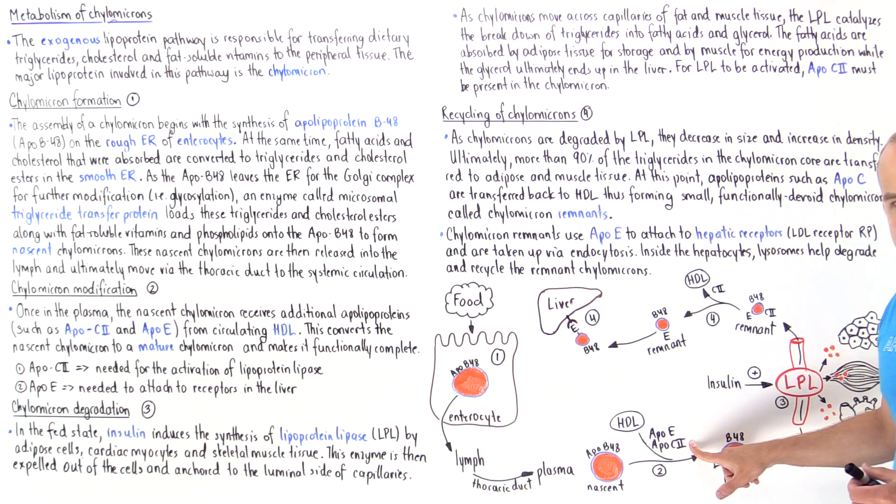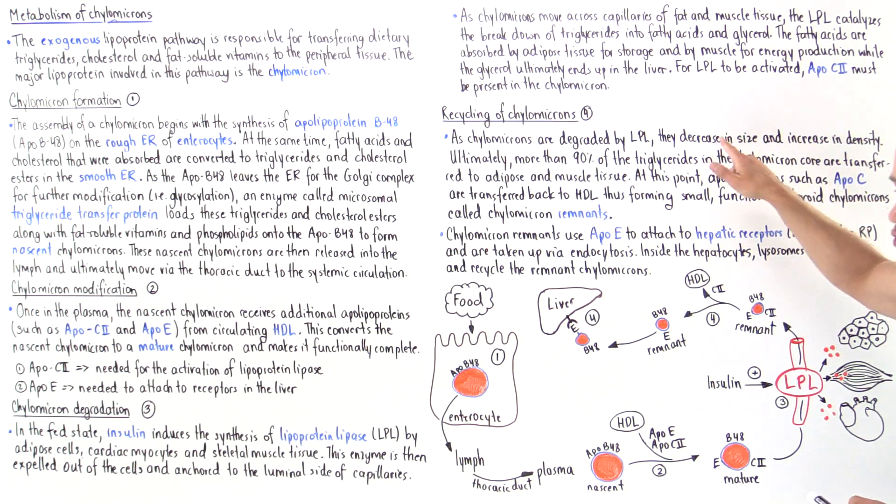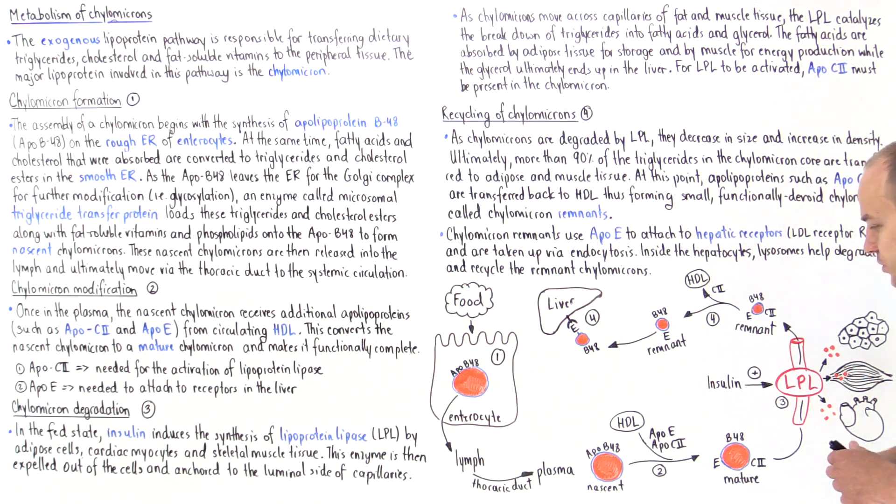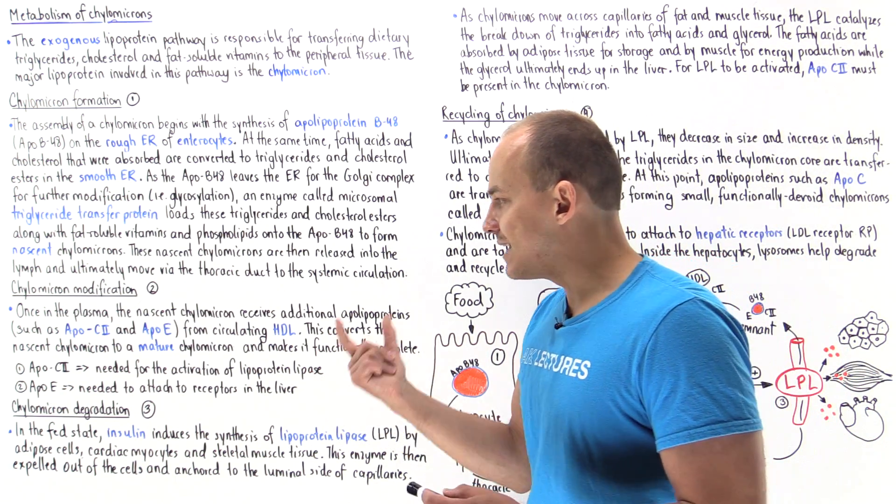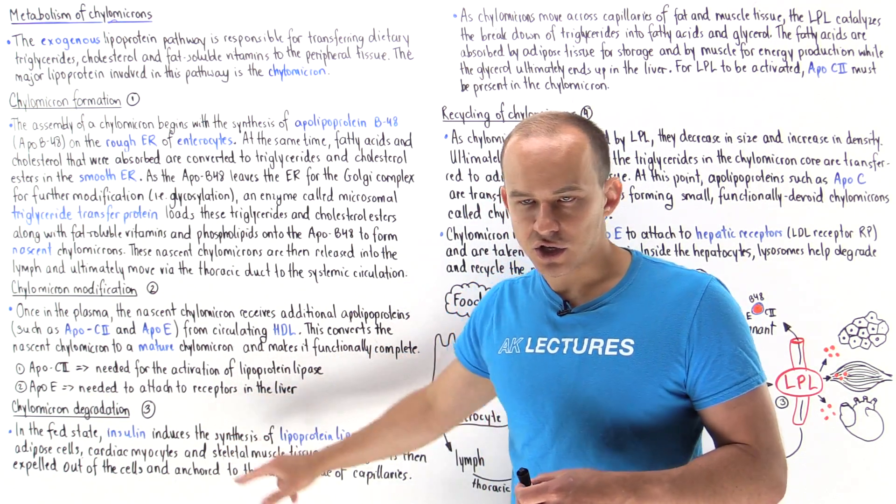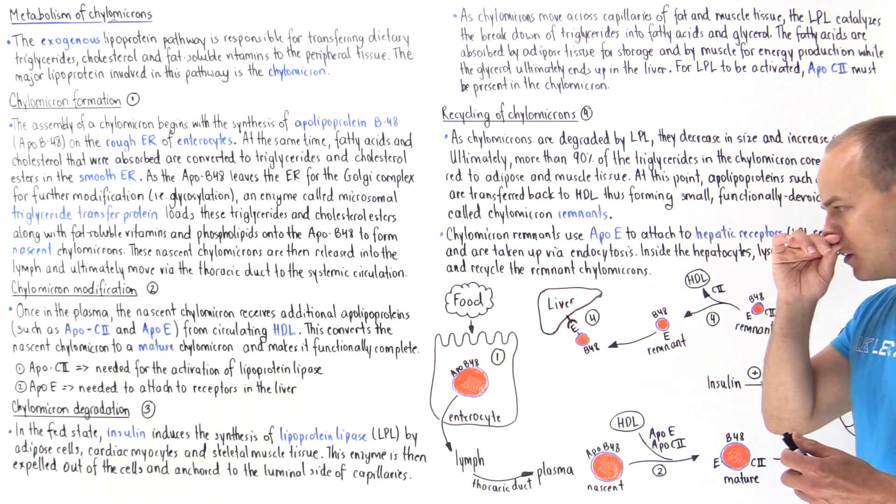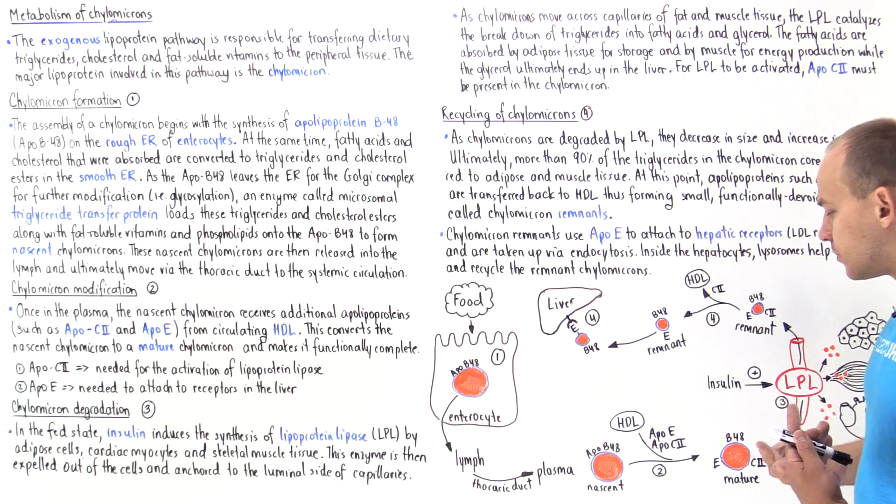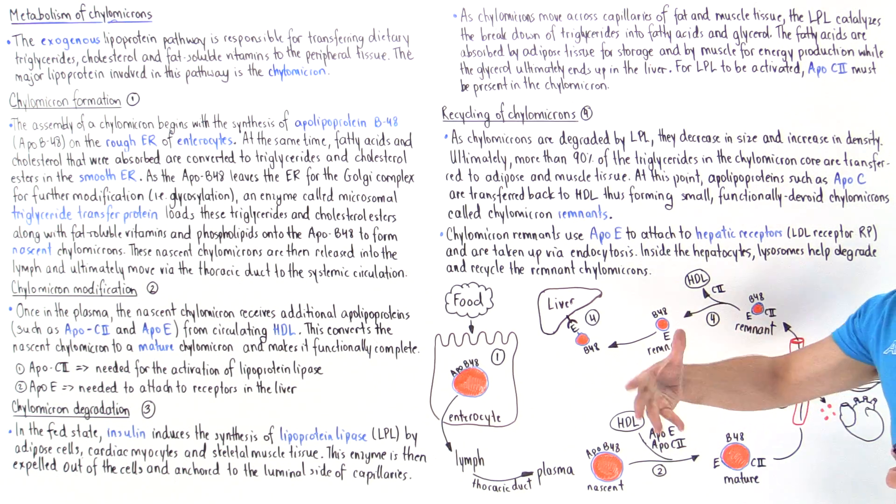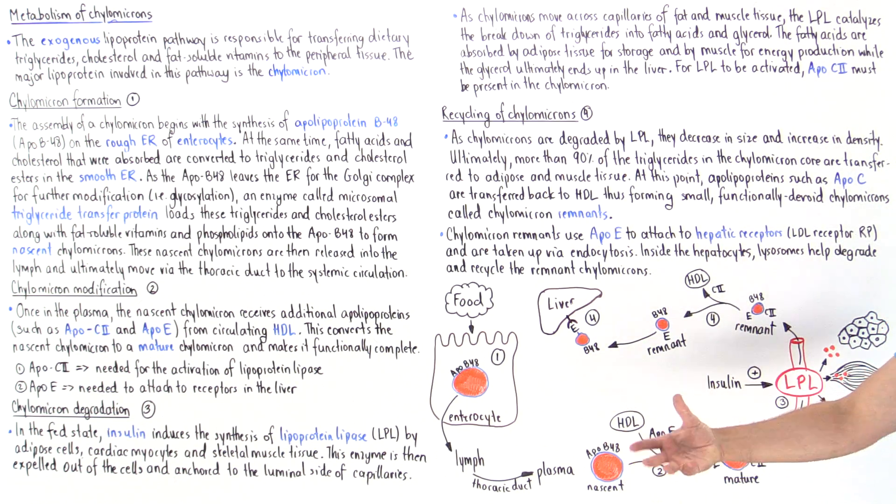Now apolipoprotein C2 is actually a cofactor for an important enzyme known as lipoprotein lipase. And apolipoprotein E is an important molecule because it allows the chylomicron to actually attach onto receptors within the liver cells. Once we transfer the apolipoprotein E and apolipoprotein C2 onto the nascent chylomicron, this confers functionality to the chylomicron, and so now we have a fully functional mature chylomicron.